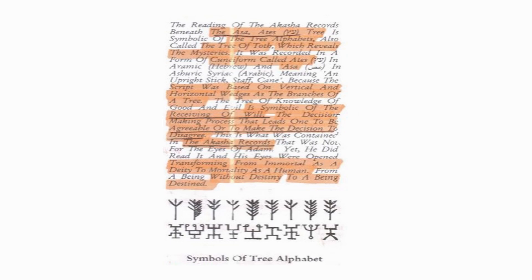Cuneiform came from the actual trees because the wedges in cuneiform look like the horizontal and vertical wedges of a tree branch. Cuneiform came from nature. This is from 'El's Holy Torah' by Malachi Z. York. I'm getting bits and pieces from every book I need and putting it together so you can know what this first language came from.